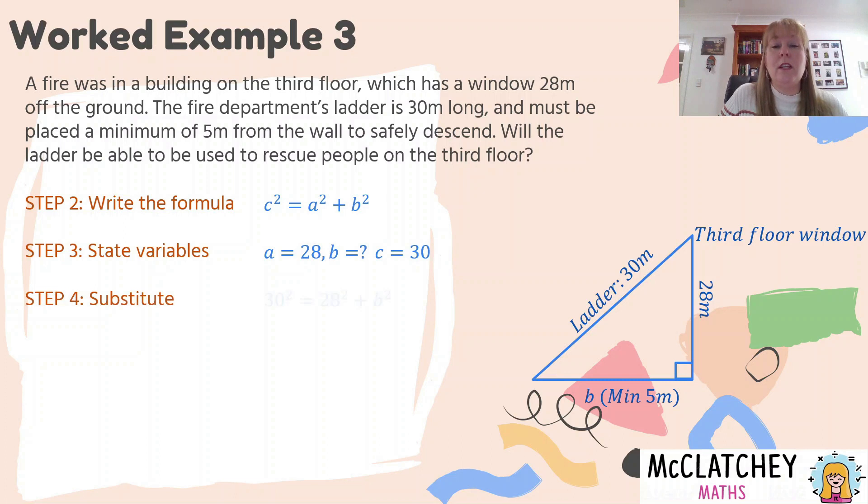So let's substitute into the question. 30², our hypotenuse, is equal to 28² + B². And then we're going to evaluate that now in our small steps as we've been doing all the way along. We're going to subtract 784 from both sides of the equation. And we get B is equal to 116. B² is equal to 116. And then we take the square root of 116. And we find that B is equal to 10.77 meters.